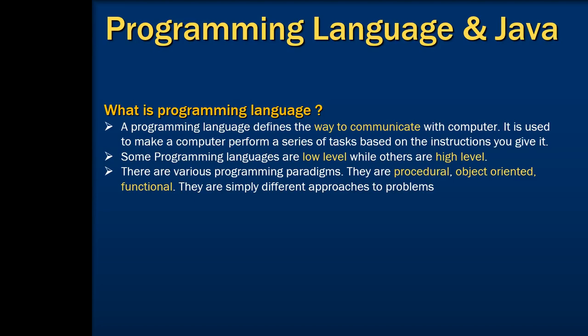Programming languages are low level or high level in nature. A high level programming language is easier to understand and user friendly. On the other hand, low level programming languages are closer to computer hardware and are useful for writing operating systems and firmware. There are various programming paradigms you will hear about, such as procedural programming, object oriented programming, and functional programming. They are simply different approaches to solve the problems in a programming language.